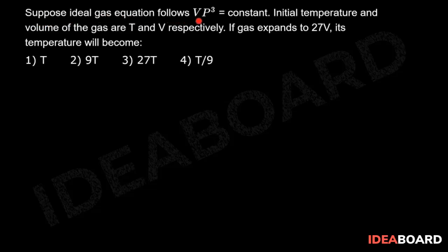Suppose ideal gas equation follows VP³ = constant. Initial temperature and volume of the gas are T and V respectively. If the gas expands to 27V, its temperature will become - let us solve this question.